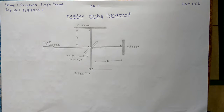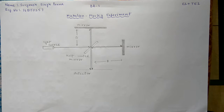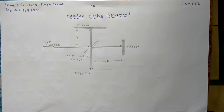Scientists of that time believed that light was a wave and like all other waves, it also needed a material medium to propagate. So they named this substance Ether. They believed that Ether was all around us and that it also filled the vacuum of space. Michelson and Morley created this experiment to try and prove the theory that Ether existed. They did this with a device called an interferometer.